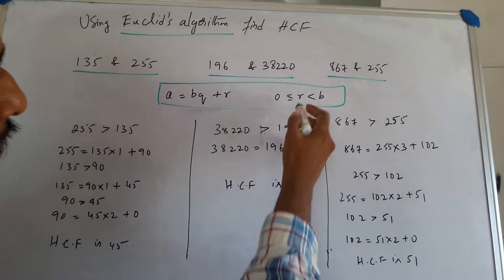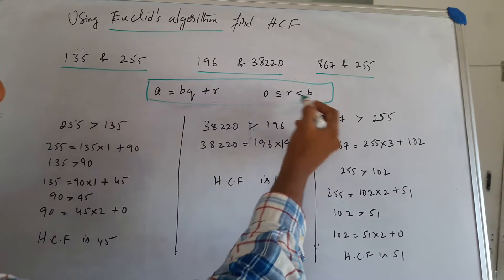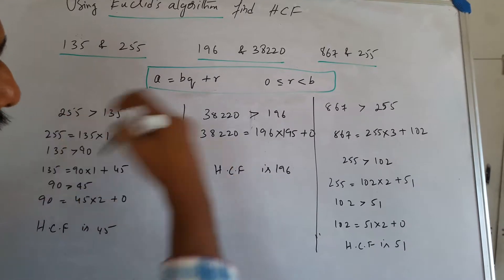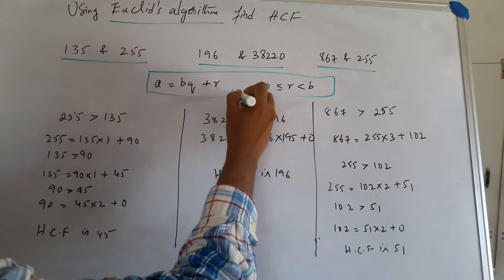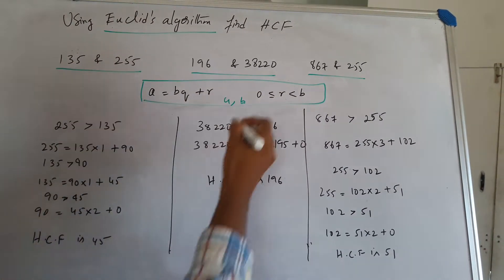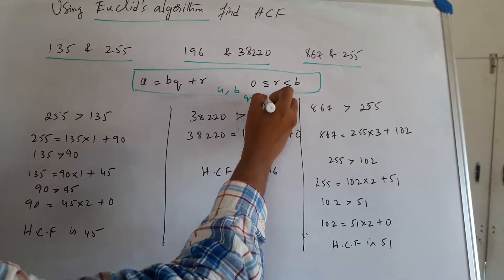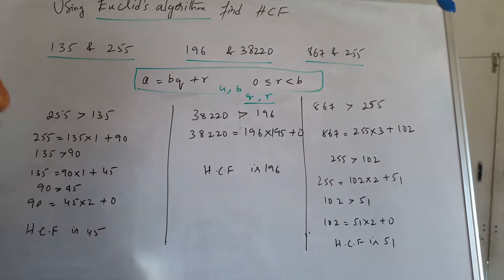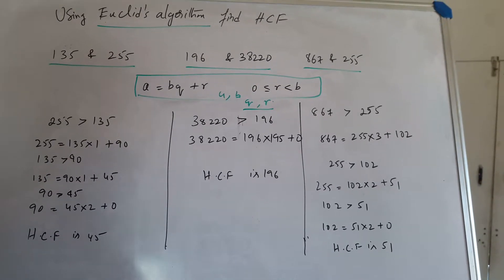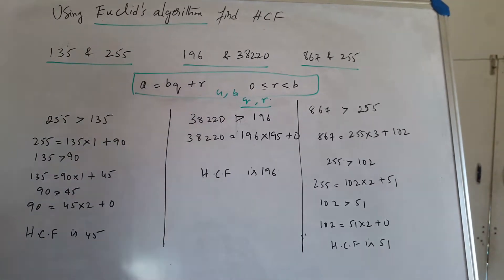Where r will be ranging from 0 to b, and a and b are the positive integers. And q and r are the unique integers corresponding to a. Let us see how the problem can be done.